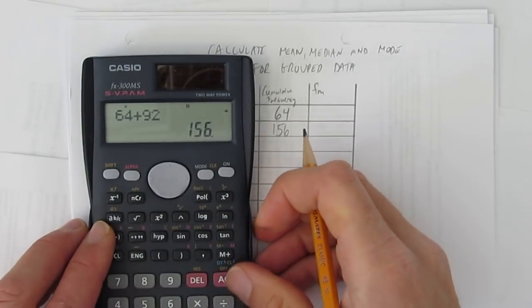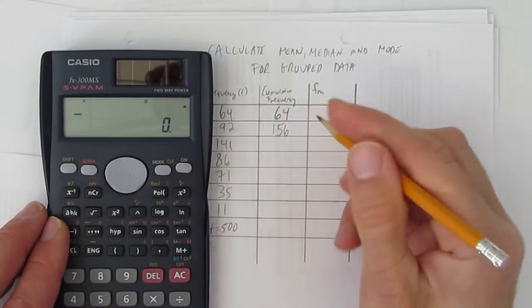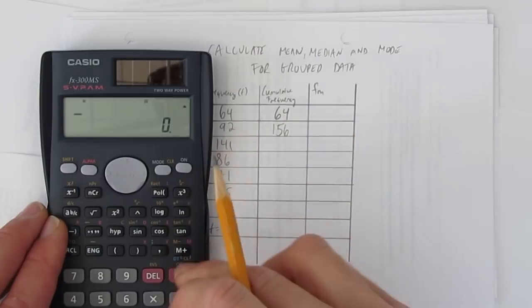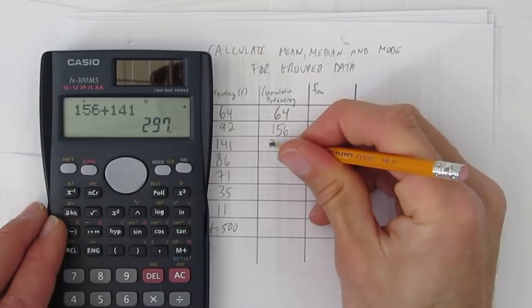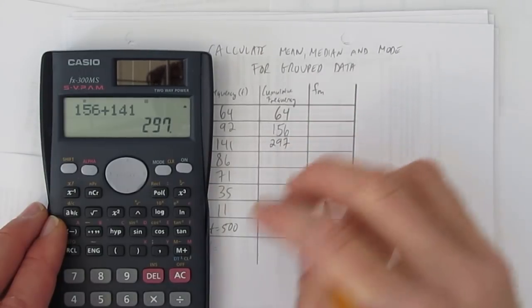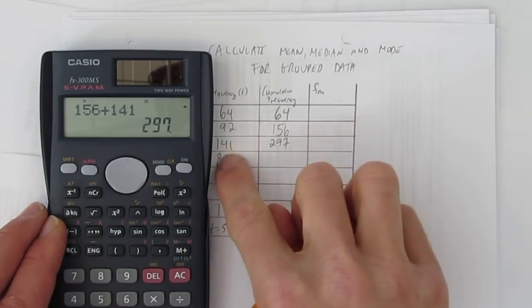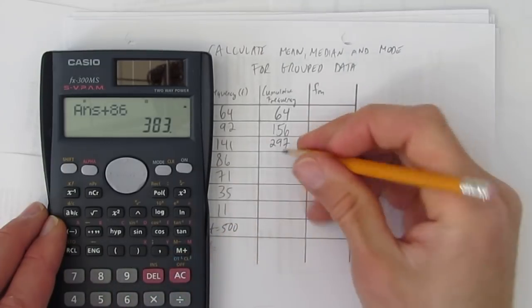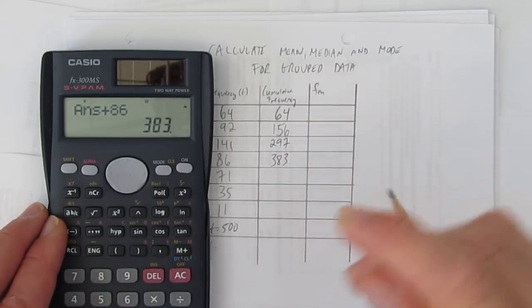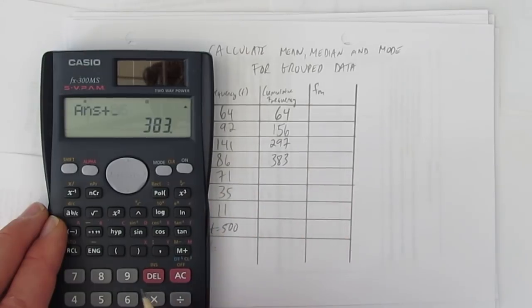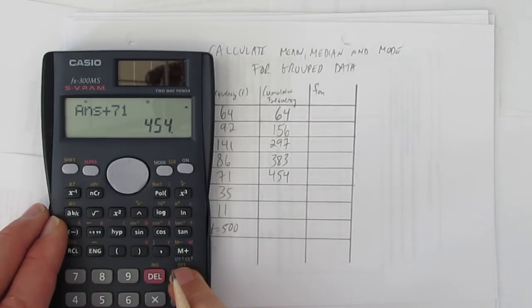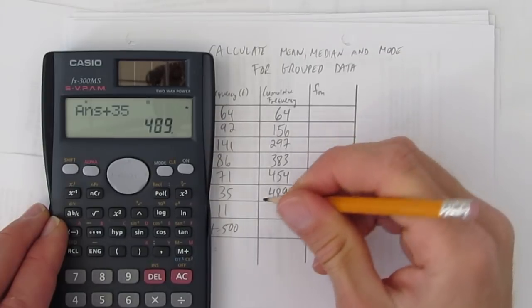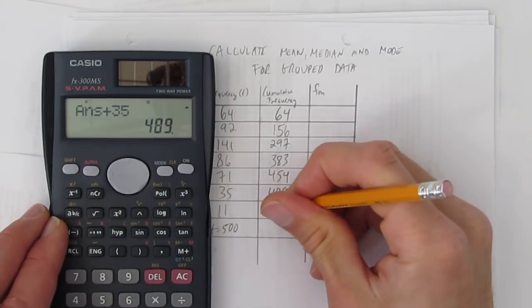Go move the calculator over here. And so then, to this point, I've seen 156 and another 141 things, which means up till here, I've seen 297 things. And then the next part I've seen 297 and another 86 things, which means up to here, I've seen 383, and then 454, and then 489.